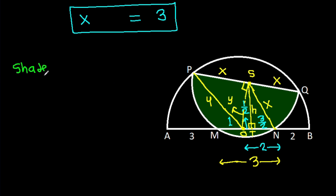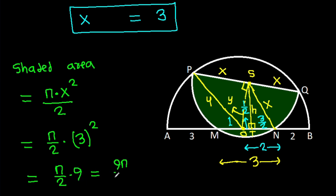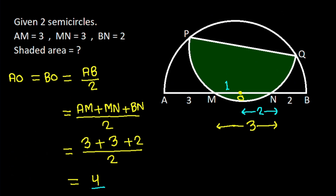Now the shaded area will be pi times radius X squared over 2, and it is pi over 2 times X equals 3 squared, and it is pi over 2 times 9, that will be 9 pi over 2.